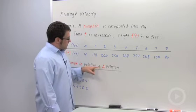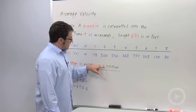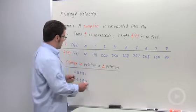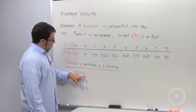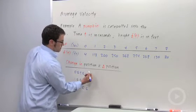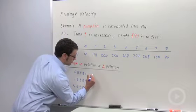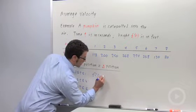Get used to this symbol in calculus. The delta means change in. So delta position means change in position. Over the interval from 0 to 1, the change in position on the interval from 0 to 1 would be f of 1 minus f of 0.